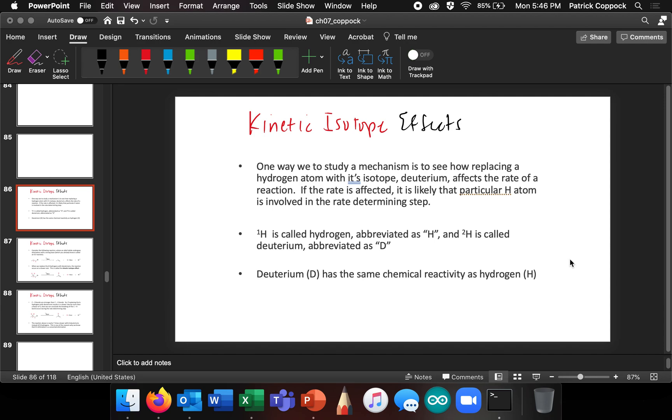We know that one way to study a mechanism is to see how replacing a hydrogen atom with its isotope, deuterium, affects the rate of the reaction. So there's a lot of big words for saying that. Let's talk about this a little more slowly.